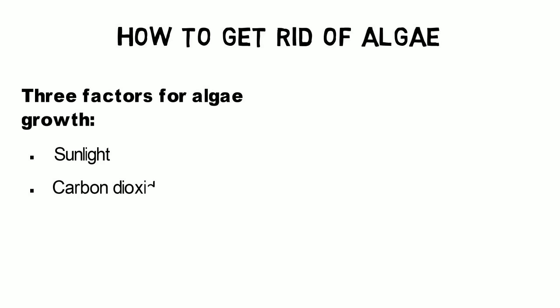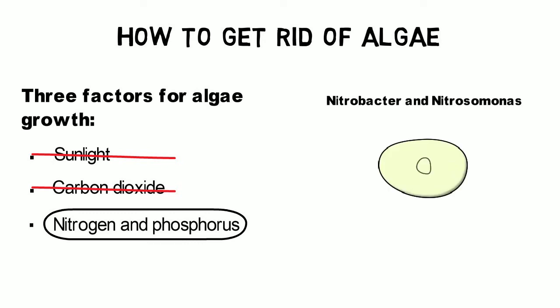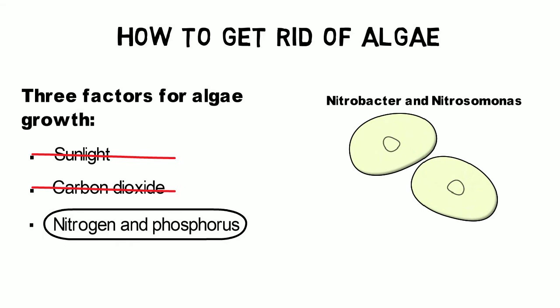As we can't really influence how much the sun is shining or how much carbon dioxide is in the air, the only solution to remove algae permanently is to reduce nitrogen and phosphorus levels in the pond. As in a wastewater treatment plant, every pond contains certain types of bacteria called nitrobacter and nitrosomonas that consume nitrogen. Increasing their number results in reduced nutrient levels for algae bloom, which consequently eliminates the algae.